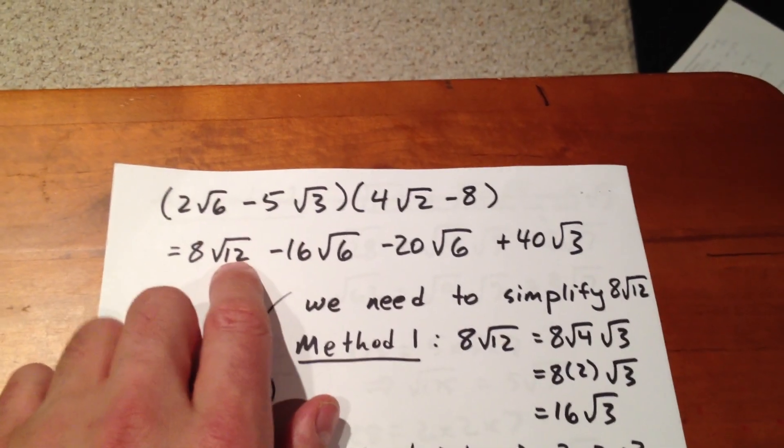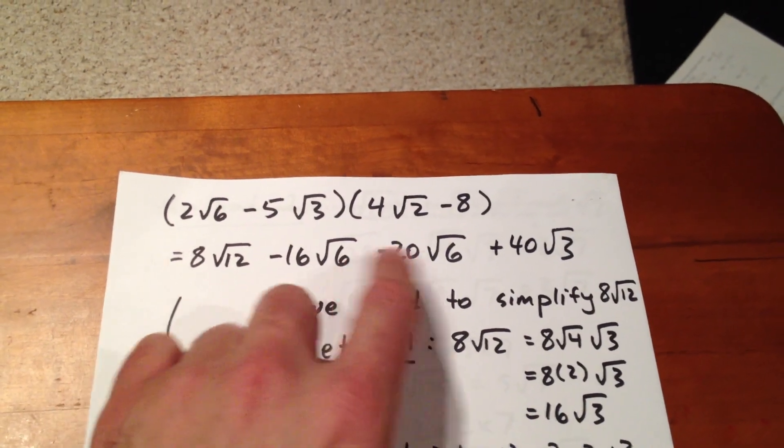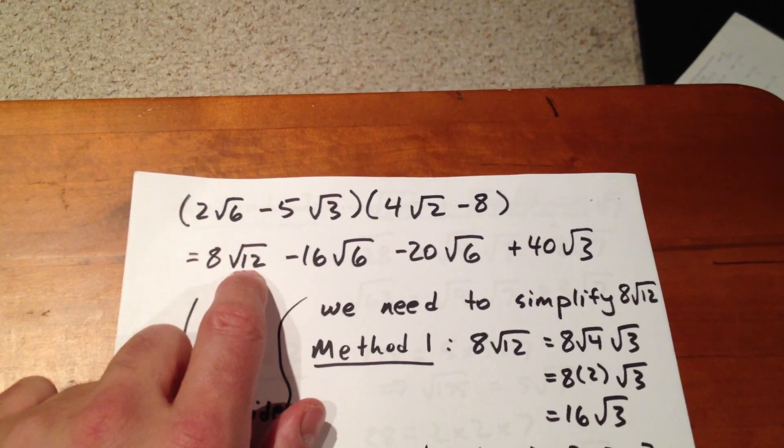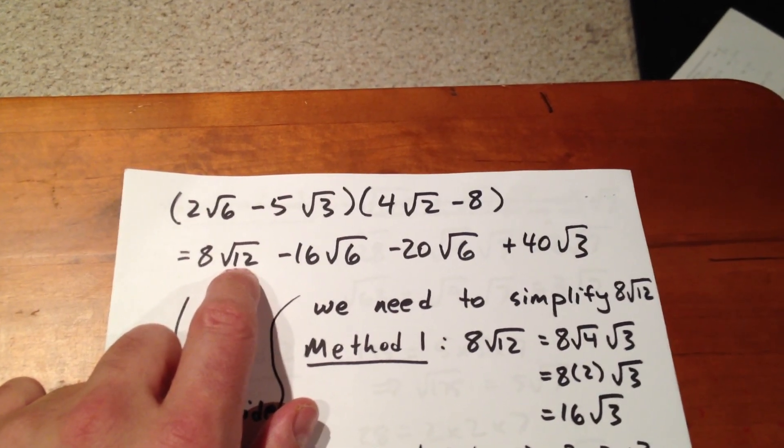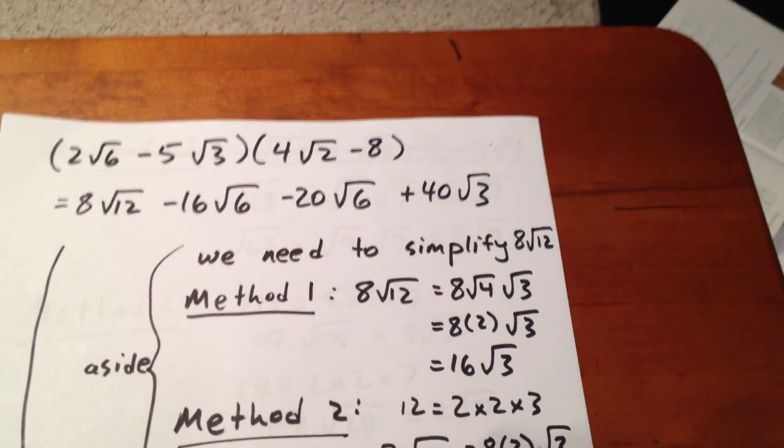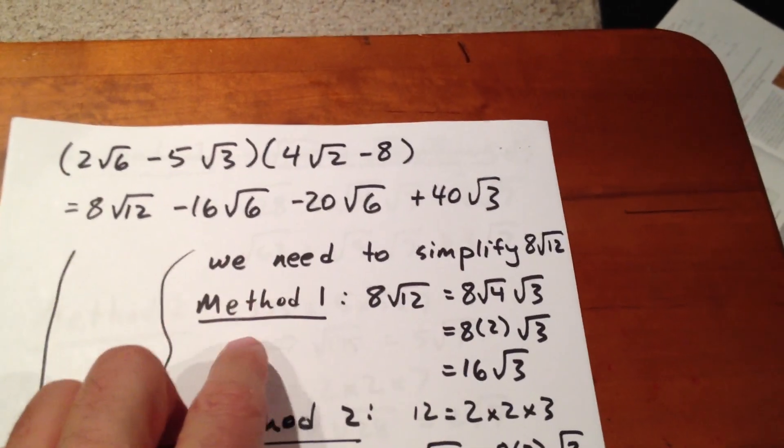Now, we see that we cannot reduce √6, √6, or √3, but we can reduce √12. √12 has a perfect square that divides evenly into it, specifically 4. So to simplify 8√12, we can use either one of two methods.